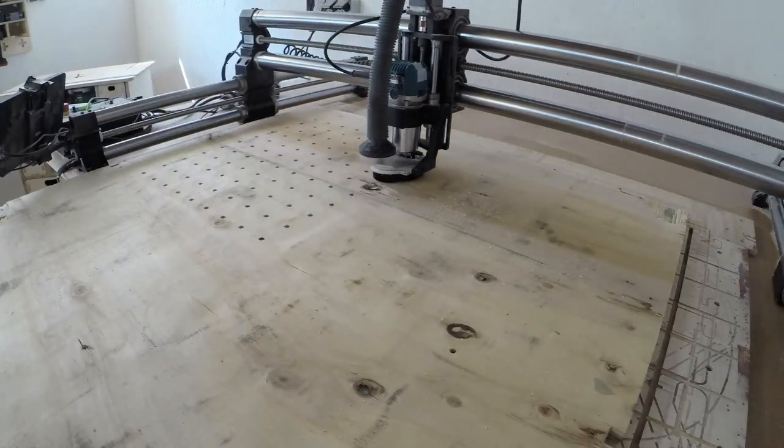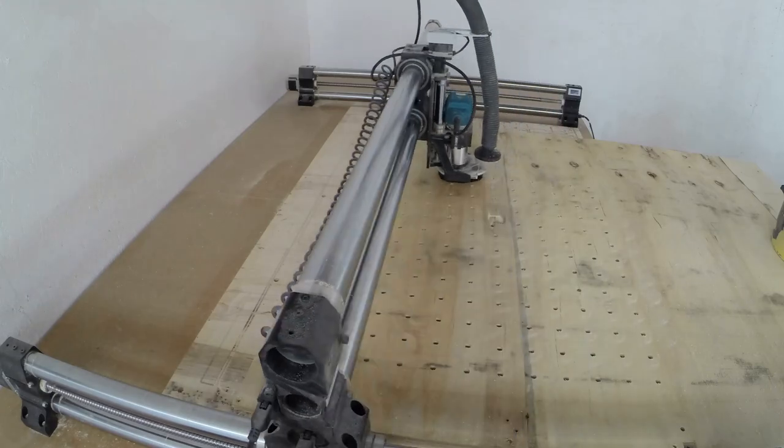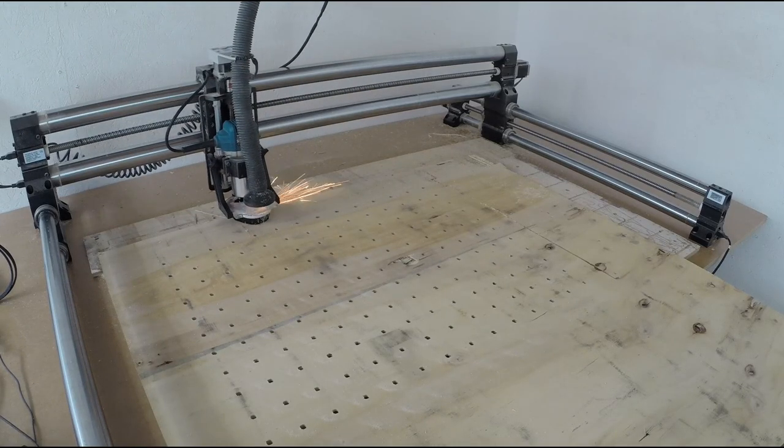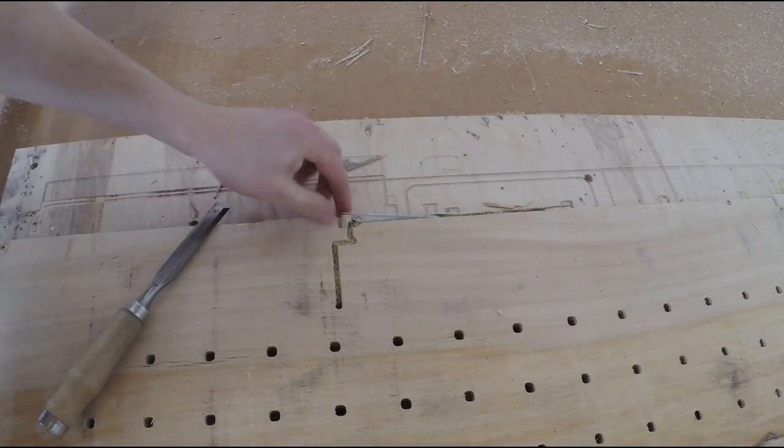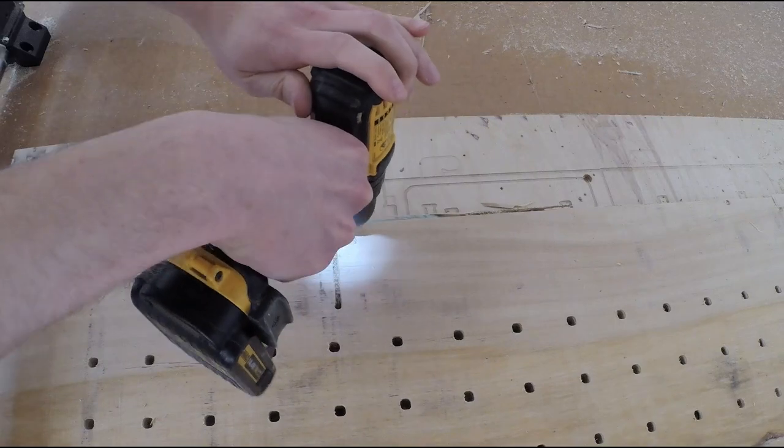However, you have to be very mindful of all the cuts you make and the order you do the cutting operations. And if you're not careful enough, this is what can happen. Yep, I accidentally cut the hold down screw. When positioning the material on the CNC, I forgot that I offset the operations by 3 cm.